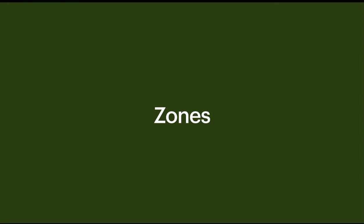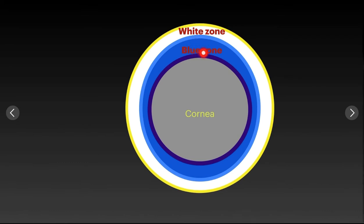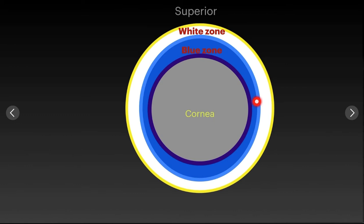The important areas demarcated by these three limbal borders are two zones: the blue zone and the white zone. The blue zone lies between the anterior limbal border and the mid limbal border. The white zone lies between the mid limbal border and the posterior limbal border. Notably, the white zone is roughly equal in width in all directions, whereas the blue zone is widest in the superior quadrant and smallest in the temporal and nasal quadrants.